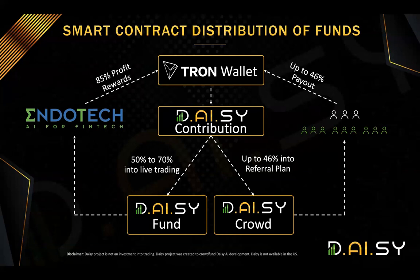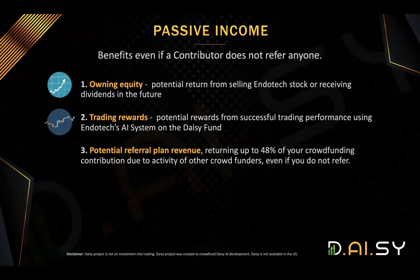This portion that goes into the DAISY fund will be sent to Endotech brokerage accounts on Binance or Gemini and will be traded for the members. 85% of profits will go back to the smart contract — 70% will go to members, 15% will go to the residual referral plan. One of the most frequently asked questions is: can I earn passively in DAISY without referring people to the smart contract?